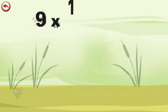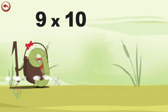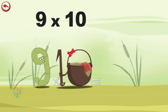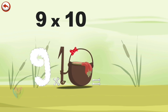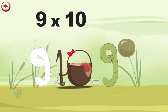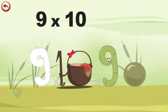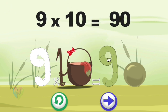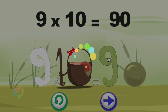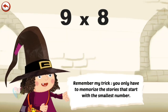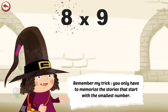What's the story of 9 times 10? When Slimey 9 meets the potion Magi 10, it makes him very, very hungry. He dives head first into the cauldron and comes out feeling very full. He gives an enormous magic burp and blows a bubble in the shape of a 0. 9 times 10 is 90. Remember my trick: you only have to memorise the stories that start with the smallest number.